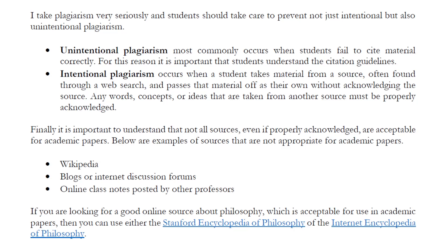It is really important to remember that you are not required to use any source other than the assigned text for this assignment. In fact, in some cases — perhaps many cases — using outside sources may simply detract from doing a close reading and analysis of the text itself, which is really the main point of this assignment. You should never rely on external sources to the point where you are no longer demonstrating your own understanding of the material. However, if you are looking for some further reading or some outside sources to help you, then there are two websites I would recommend which are both linked on the response paper guidelines document: the Stanford Encyclopedia of Philosophy and the Internet Encyclopedia of Philosophy. The latter is usually aimed more at a beginner level, but both have a wide variety of peer-reviewed entries on a wide variety of philosophical topics.